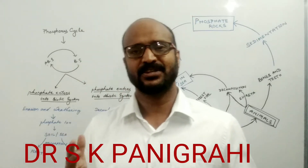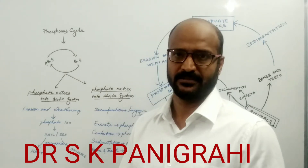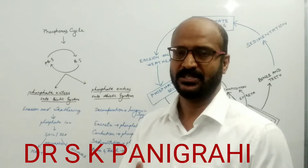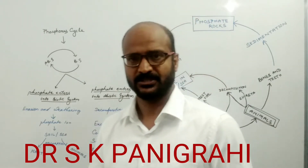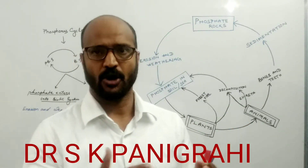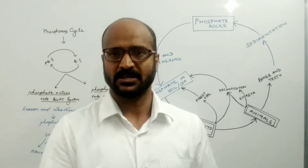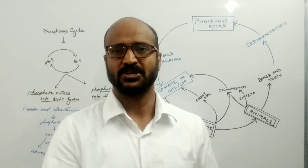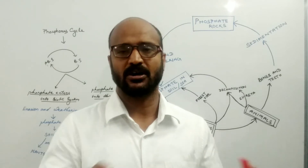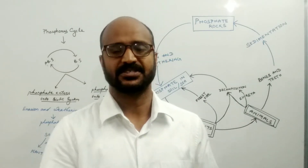Welcome to another session. In this session I have a talk about another type of biogeochemical cycle — the phosphorus cycle. The phosphorus cycle is slightly different from our previous cycles, the carbon cycle and the oxygen cycle. In the case of the carbon and oxygen cycles, the main reservoir is the atmosphere, but for phosphorus the main reservoir is the soil, rock, lithosphere, or earth's crust. That's why the phosphorus cycle is also known as the sedimentary cycle.